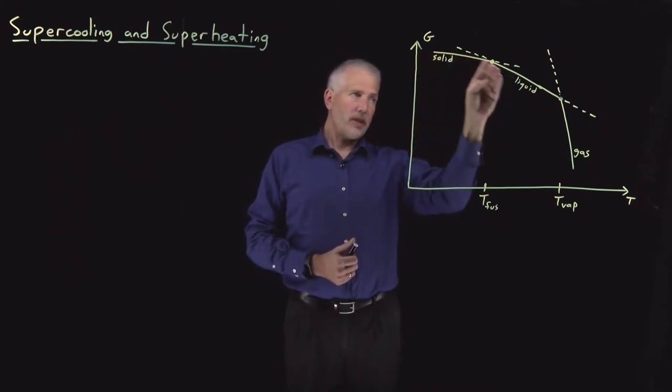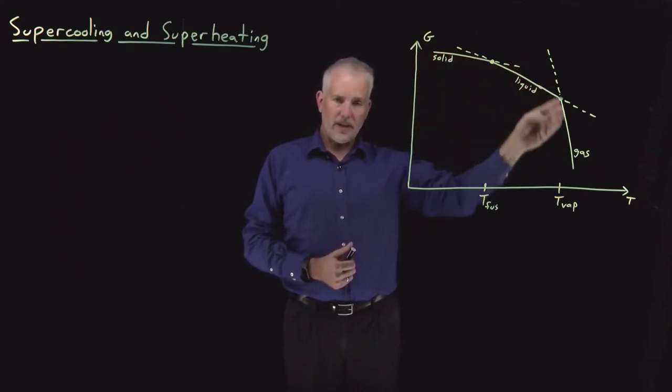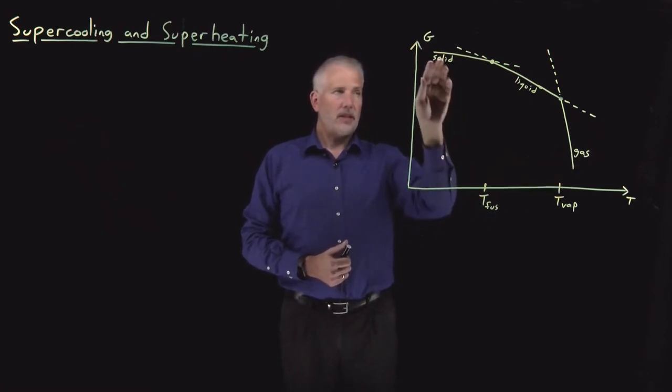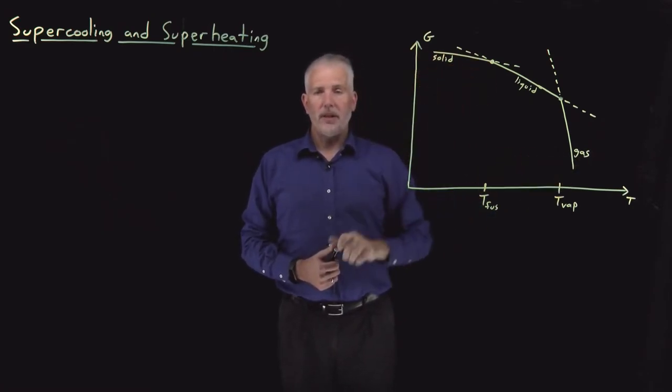Free energies are decreasing for each of these substances, but at a faster rate for the ones that have higher entropy, like the gas, and at a slower rate for the ones that have low entropy, like the solid.